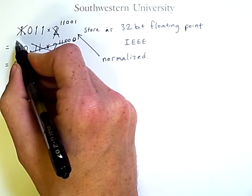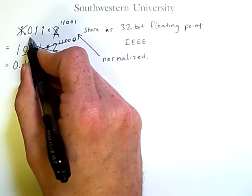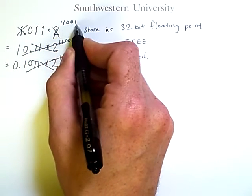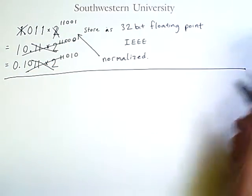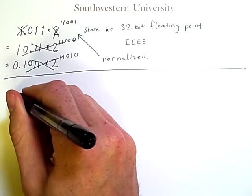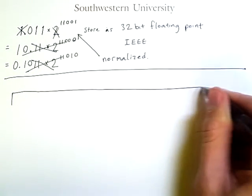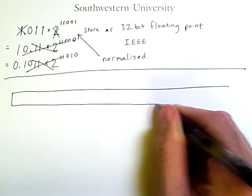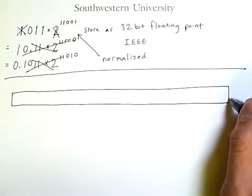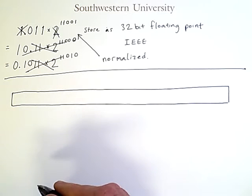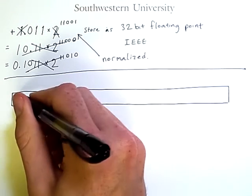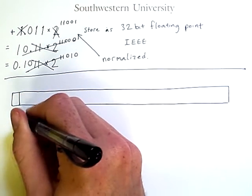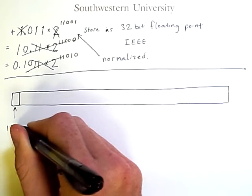We've eliminated the base 2 since we're working in base 2, and we've just eliminated the implicit leading 1. At this point, we really just need to represent and store these 3 bits and these 5 bits. Here is how it would actually be done in a computer — here is space for 32 bits. One thing that hasn't been accounted for yet is sign: whether the number is positive or negative. This is a positive number, and we do need to store that information.